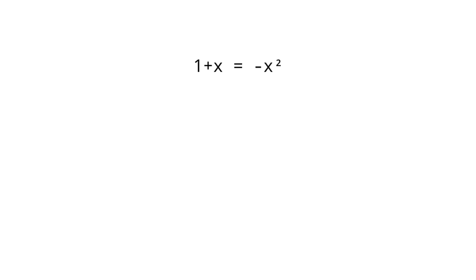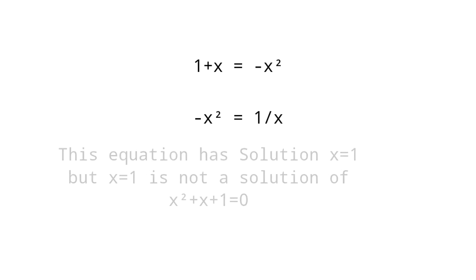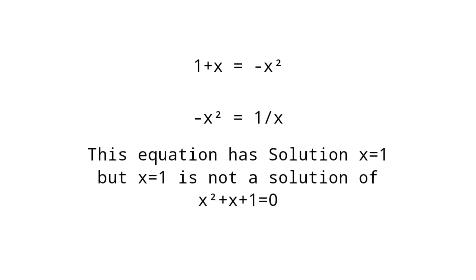I hope you found that the third step is wrong. When you substitute (1 + x) equals minus x squared, you get minus x squared equals 1/x. This equation has the solution x equals 1, but x equals 1 is not a solution of x squared plus x plus 1 equals 0.